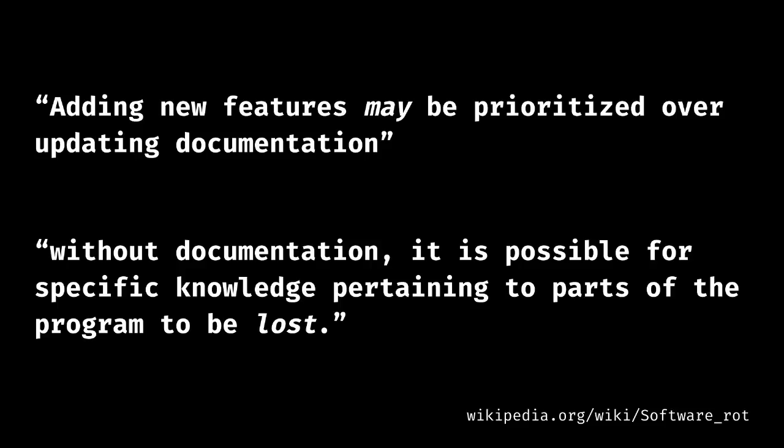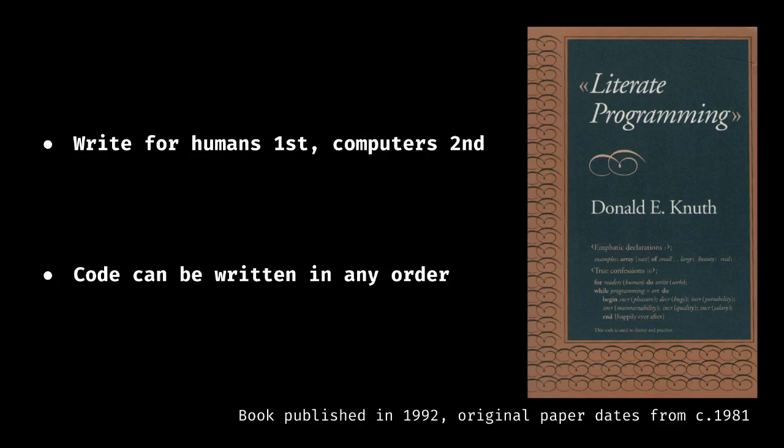APIs change, software and plugins alter their interface and commands, and websites go away. As you probably know, this is called software rot. To solve this, I propose we write our documentation in a way that can be executed or tested. Before I show you my solution, I'd like to talk about a key concept I've used called literate programming.